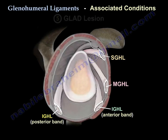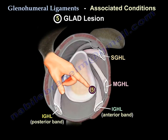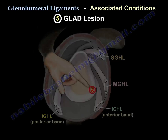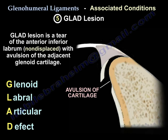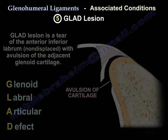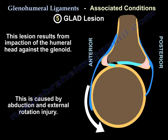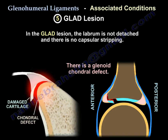Another lesion in this area is the GLAD lesion. The GLAD lesion is a tear of the anterior inferior labrum which is not displaced, with avulsion of the adjacent glenoid cartilage. The lesion results from impaction of the humeral head against the glenoid, caused by abduction and external rotation injury. In the GLAD lesion, the labrum is not displaced and there is no capsular stripping.